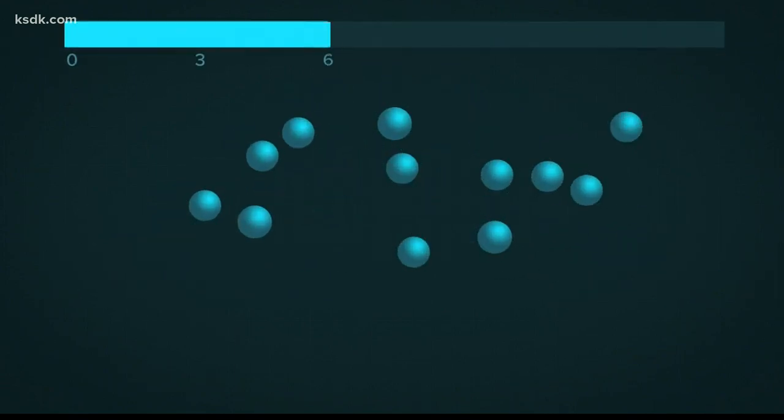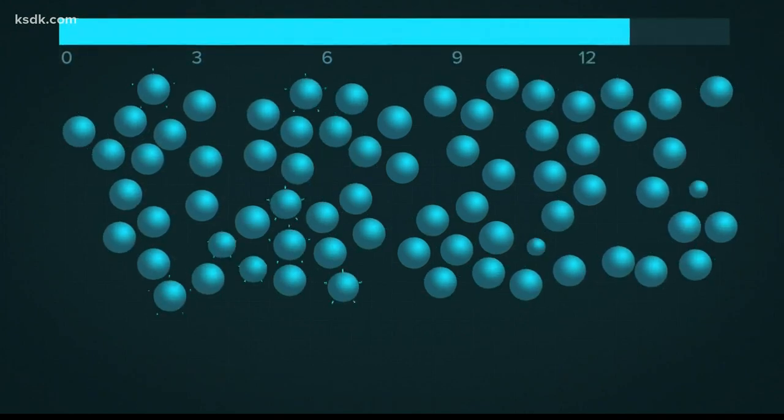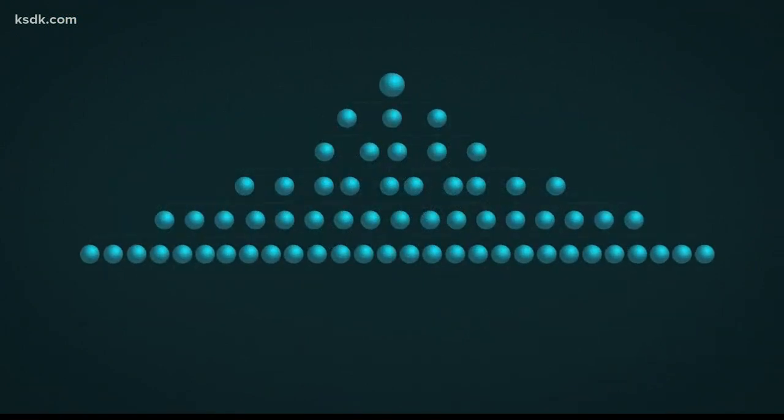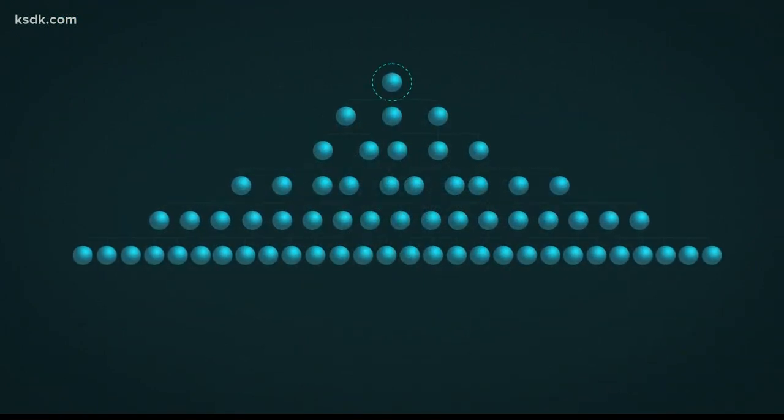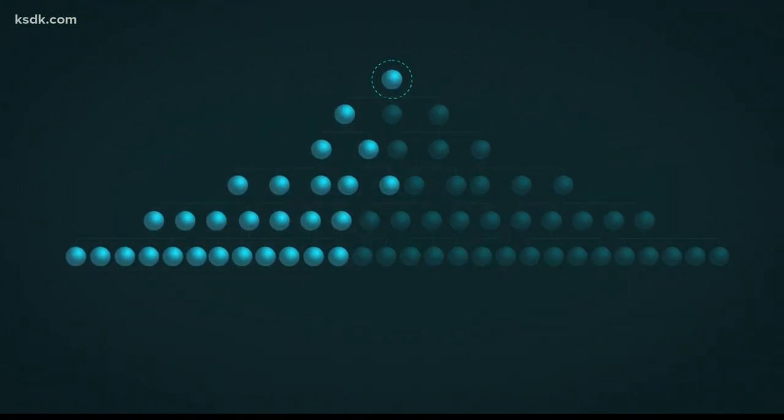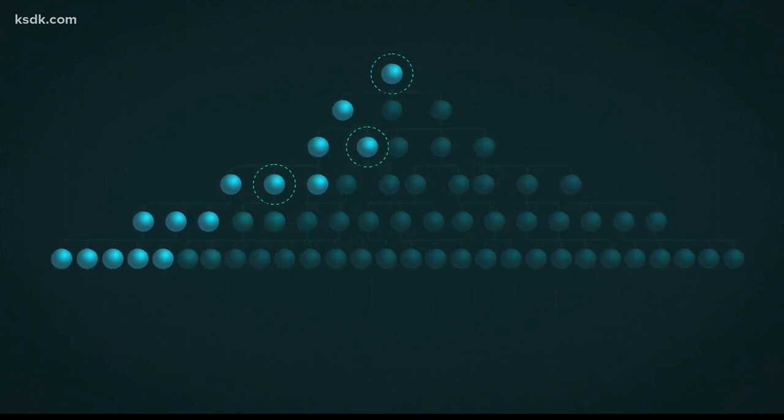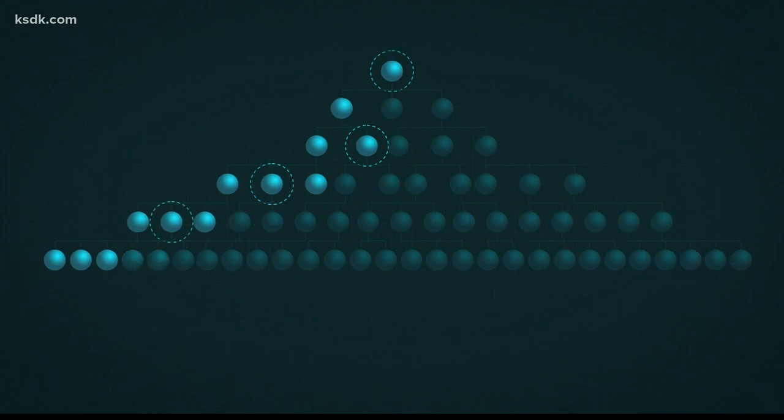In the US, the number of cases is doubling every three days, a true case of exponential growth. But let's say you decide to social distance and infect only one, not two. And that one doesn't go to work and infects no one. The end of the line.